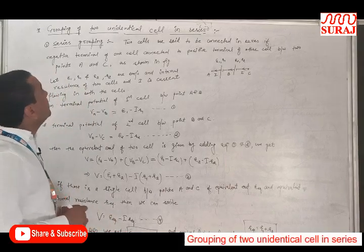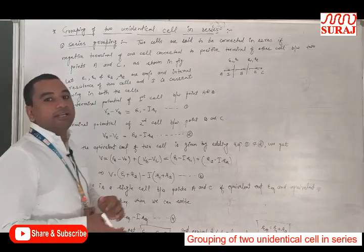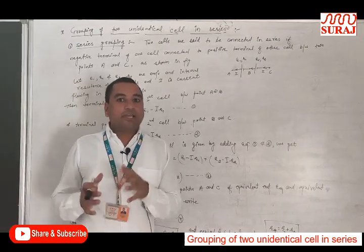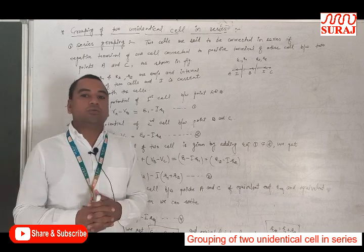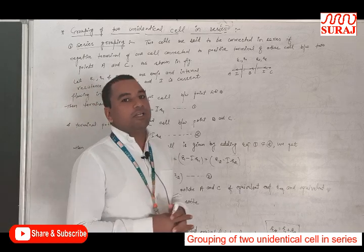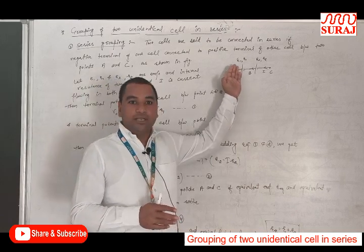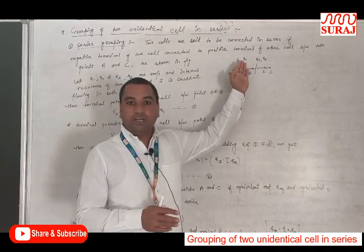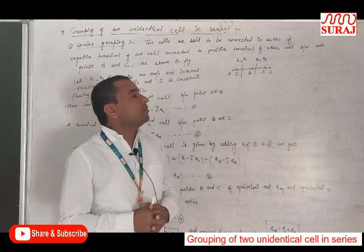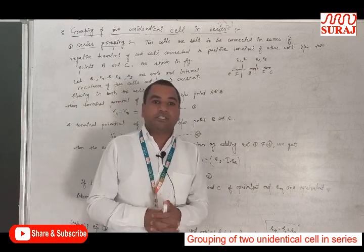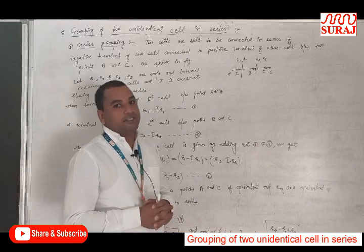First of all, series grouping. The two cells are said to be connected in series when the positive terminal of one cell is connected to the negative terminal of the other cell. As shown in the figure, let two cells of EMF E1 and E2, and internal resistance R1 and R2, be connected between points A and C, having current I.